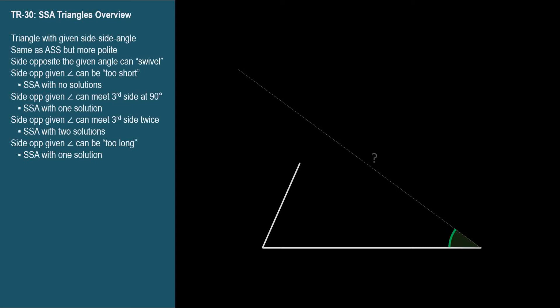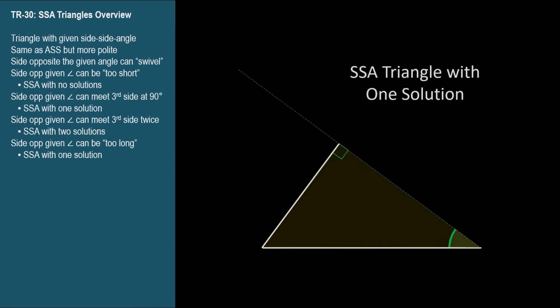The first scenario is when the swivel side is too short to reach the third side. This is the case of an SSA triangle having no solutions. If we let the swivel side get a little longer, we can just barely reach the third side at a right angle. This is an SSA triangle with one solution.